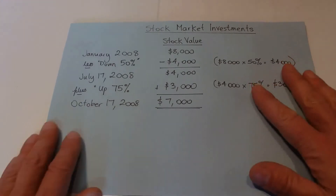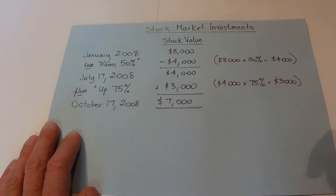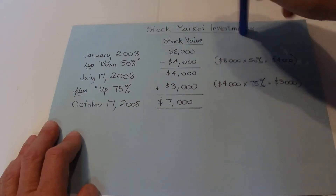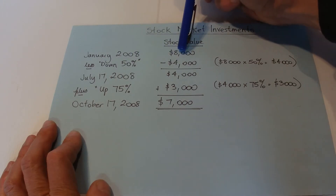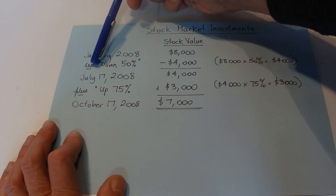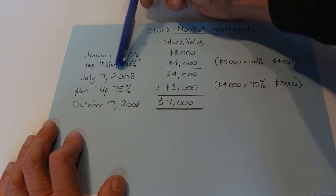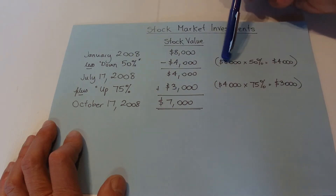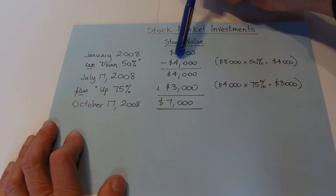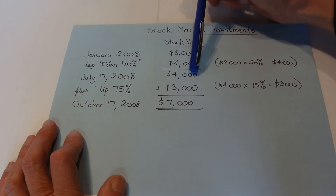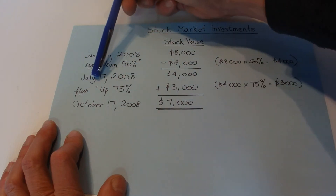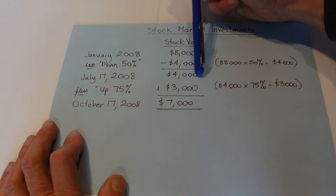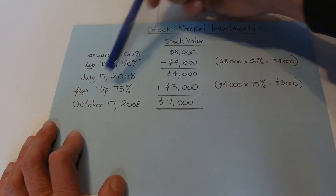I've done a simple calculation here about Simon's stock market investments, and you can see here that in January 2008 there's the $8,000 he initially invested. From the question, he was down 50%, so 50% of $8,000 means he lost $4,000. We take $4,000 away from $8,000 to give a $4,000 valuation — that's the July 17, 2008 value.